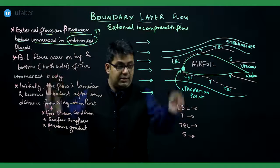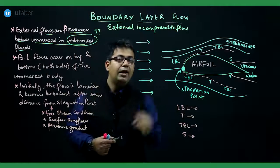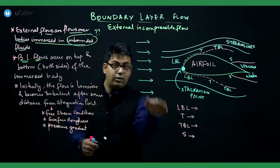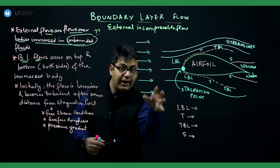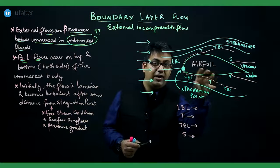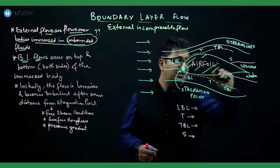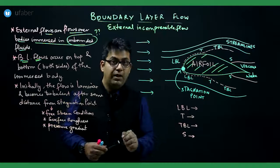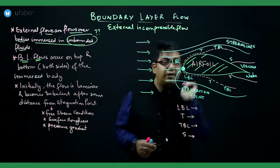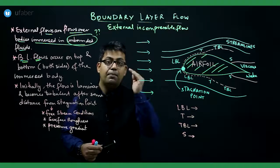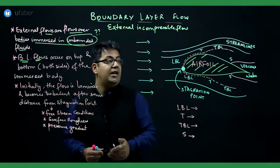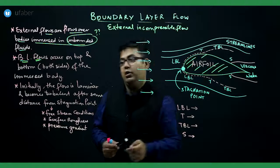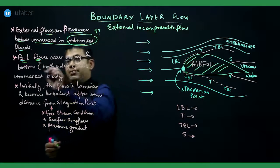Boundary layer flows are external flows happening over bodies inside an unbounded fluid. Looking at this figure, we have an aerofoil immersed in a fluid flow — the arrows indicate the fluid flow. The flow happening over the external surface of this aerofoil is called boundary layer flow, and these boundary layer flows happen on both the top and the bottom sides of the immersed body.